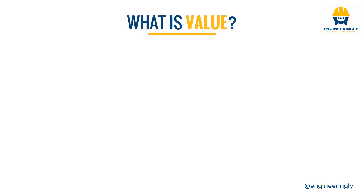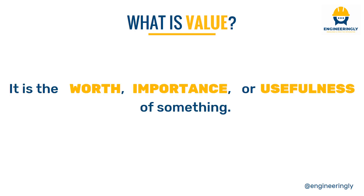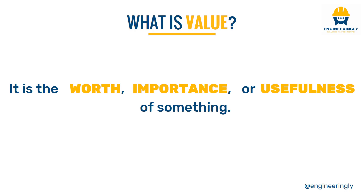First of all, let's understand what is value. PMBoK 7 has defined value in a very inclusive manner which could cover any type of value or any type of definition that we might have for value. It states that value is the worth, importance, or usefulness of something. This is quite an inclusive and broad definition — it's either worth, or importance, or usefulness.